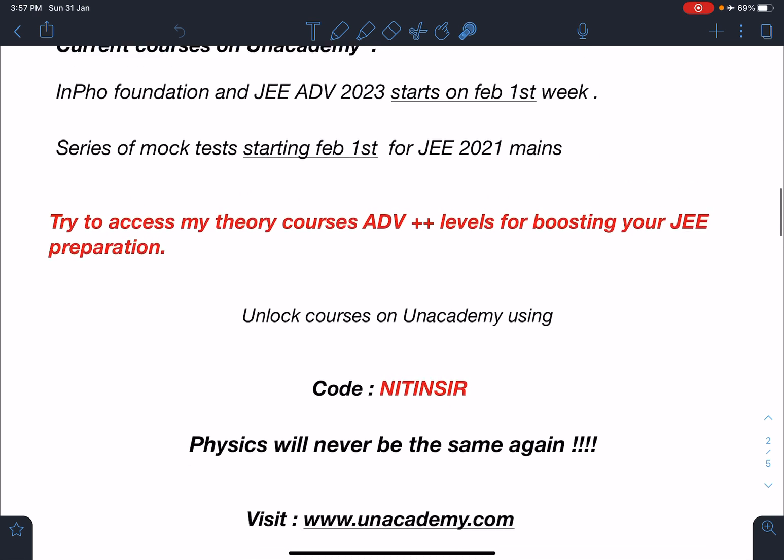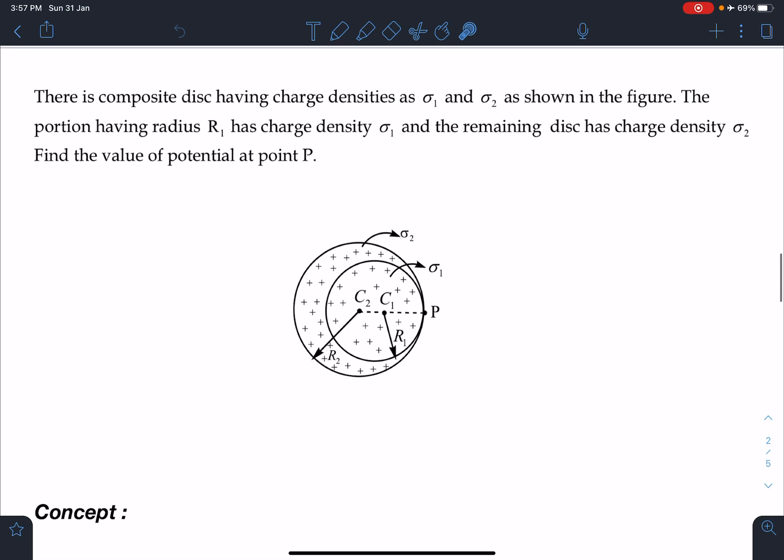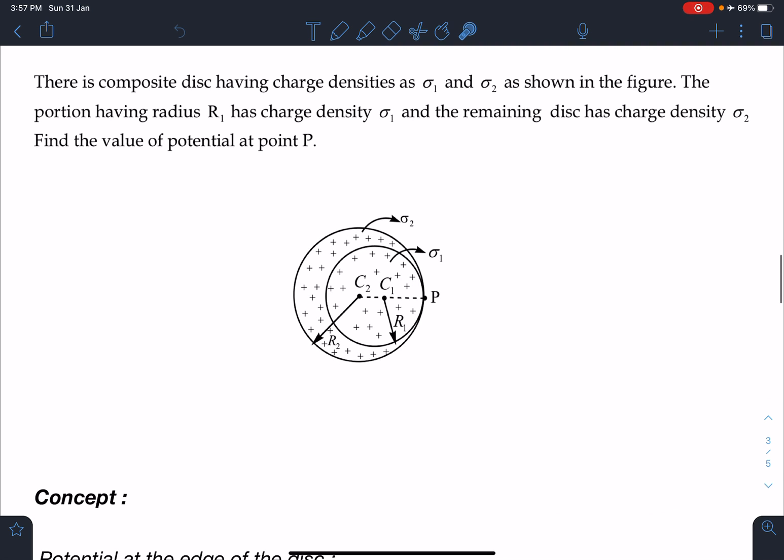Here is the statement of this problem: There is a composite disc having charge densities as sigma 1 and sigma 2 as shown in the figure.